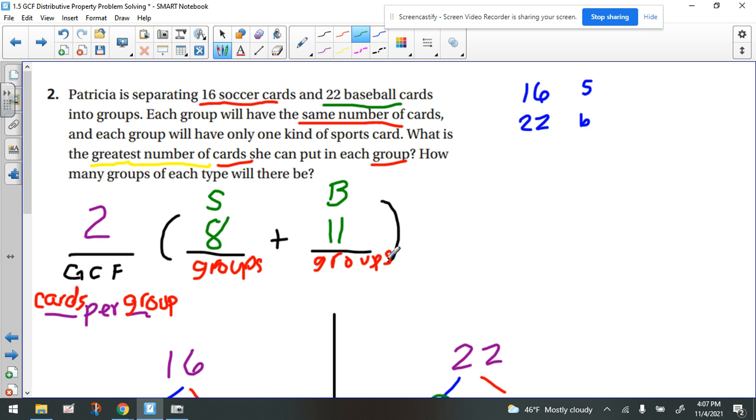Let's recap what the questions are. Remember, there's two parts to this. Part A, what is the greatest number of cards she can put in each group? That's going to be 2 cards per group, right? 2 cards per group. The second part, how many groups of each type will there be? We're going to have 8 groups of soccer cards, and we'll have 11 groups of baseball cards.